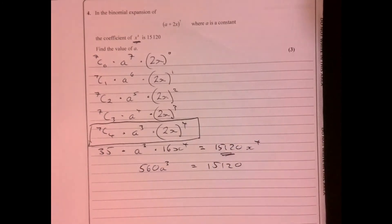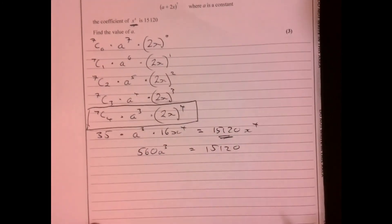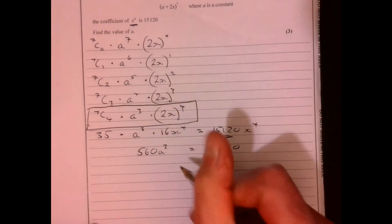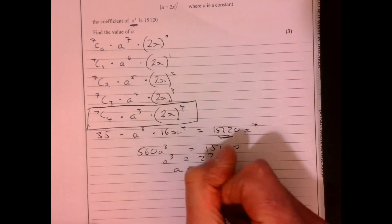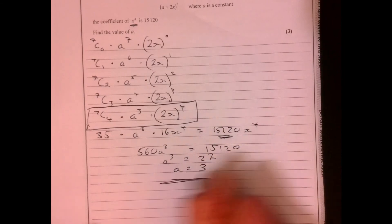Divide by 560 and that gives me a to the three equals 27, so therefore a must equal three.